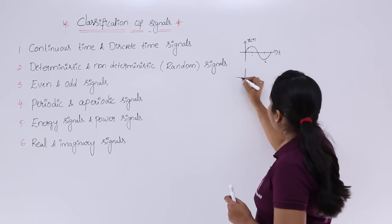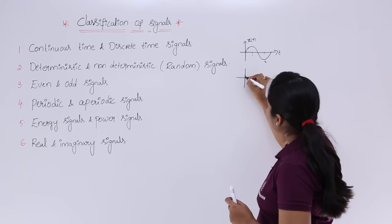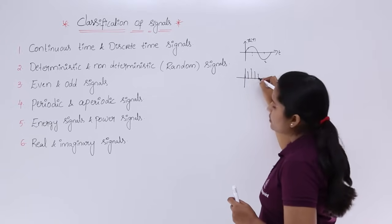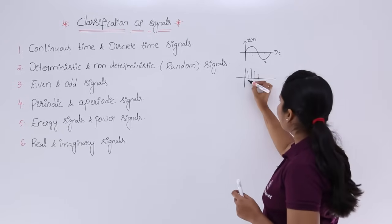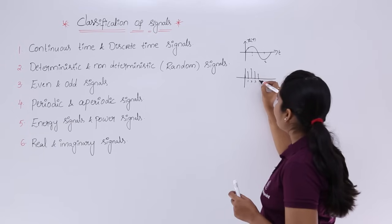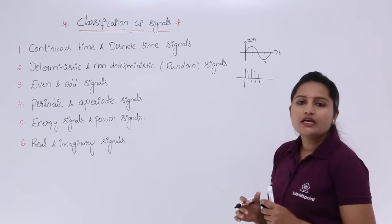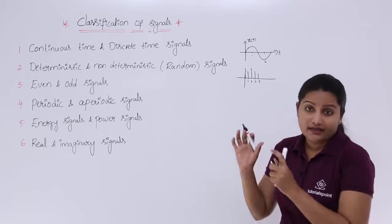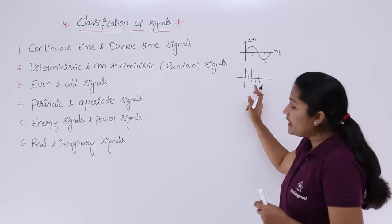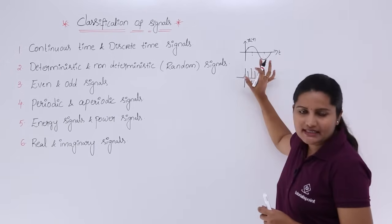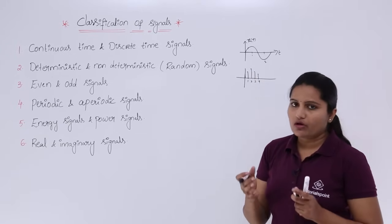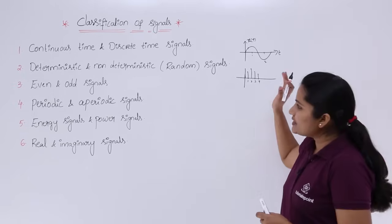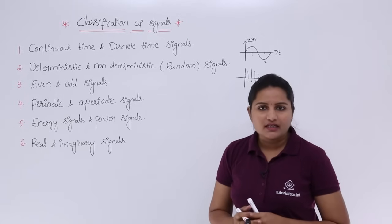Whereas in the case of discrete time signals, the signal will look like samples with a particular voltage. Only at discrete intervals — for example at 1, 2, 3, 4 — are you having some amplitude. If you want to determine the value of this discrete signal at 0.1, you are unable to determine that signal. This is the main difference between continuous and discrete time signals.